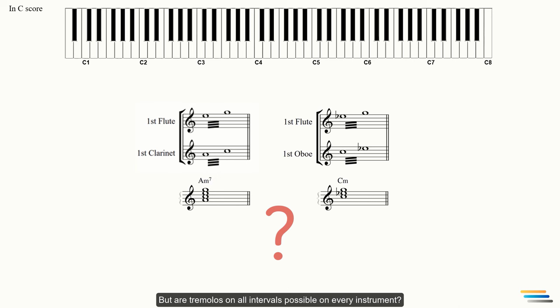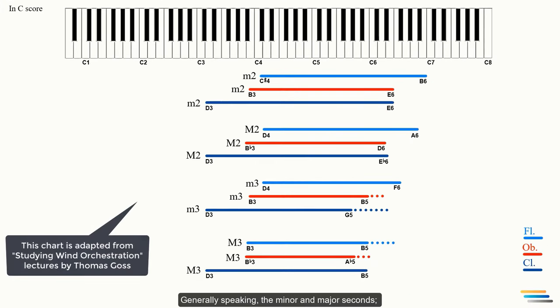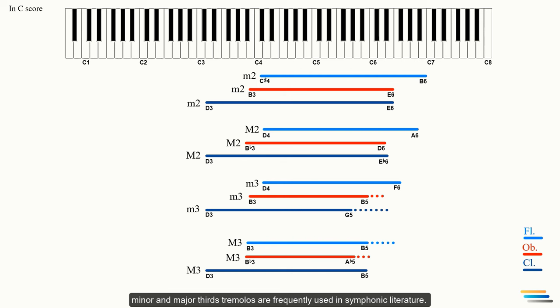But are tremolos on all intervals possible on every instrument? More detailed information about the possible intervals is available in the PDF file adapted from studying orchestration lessons by Thomas Goss. Generally speaking, the minor and major seconds, minor and major thirds tremolos are frequently used in symphonic literature. As the intervals become wider, the difficulties are increased depending on the instrument. But today I'm going to interpolate the major second intervals between the main melodic device.